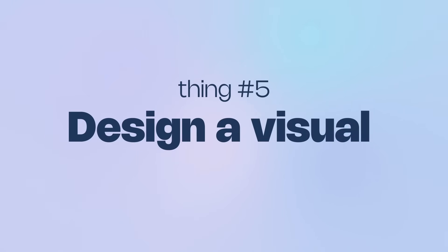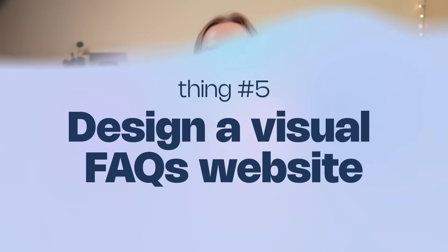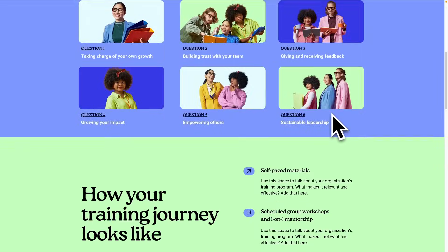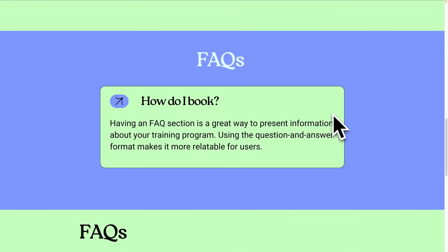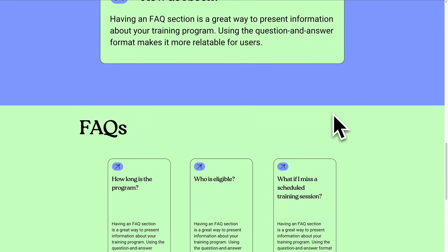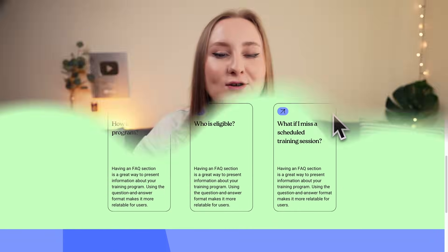Instead of typing out the same explanation over and over in your DMs and emails, you could design a visual FAQ. Build something really pretty that answers your most common questions — things like how do I book, how can I work with you, what's included in your package, how long does delivery take. It looks professional, saves you time, and is helpful for your audience or clients. Plus you can reuse it on your website, pin it as a social post, or use it in your email replies.